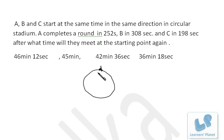B is coming at this point after every 308 seconds and C is coming after every 198 seconds. So all of them will come at this point together, that will be the LCM of these three data.